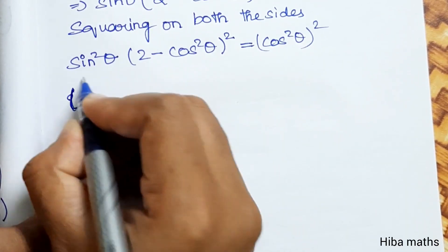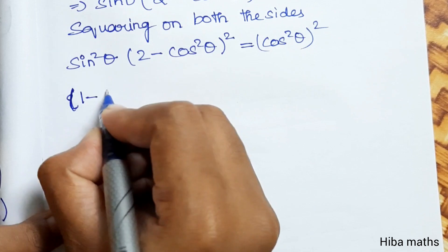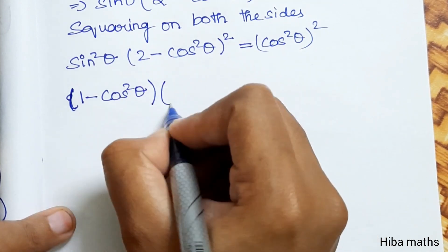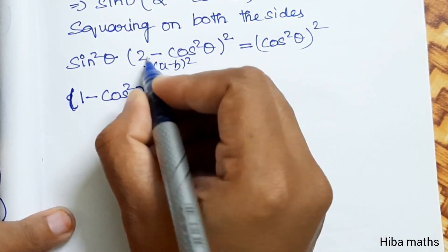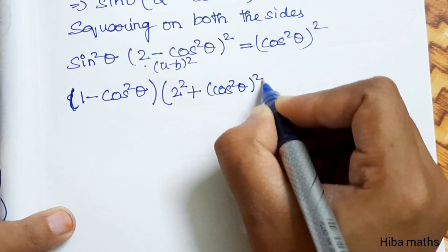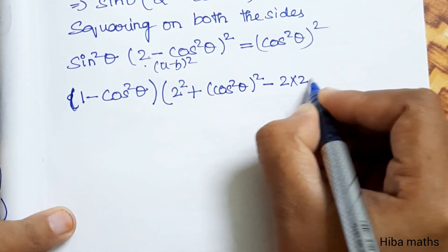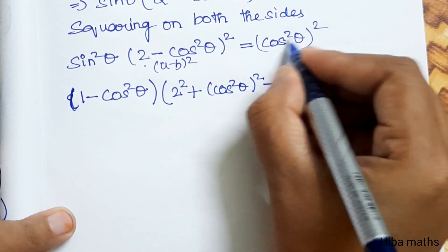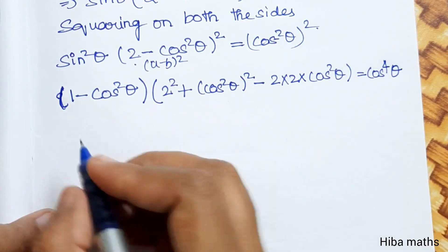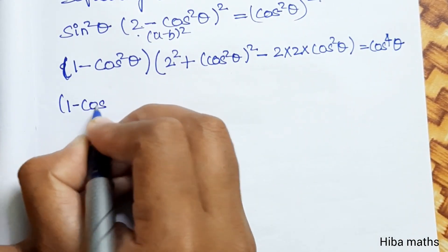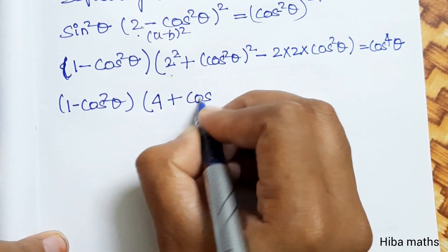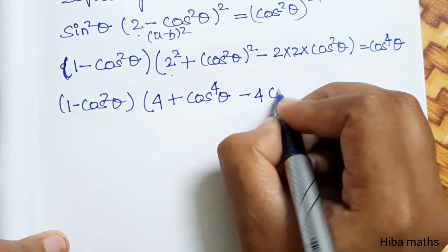Since sin²θ = 1 − cos²θ, applying the (a − b)² identity gives a² + b² − 2ab. So cos²θ expanded becomes (1 − cos²θ)², which equals 1 + cos⁴θ − 2cos²θ. Simplifying: cos⁴θ − 2cos²θ + 2 − 2 + 4 gives cos⁴θ − 2 + 4cos²θ.